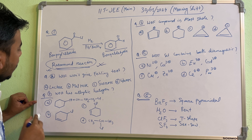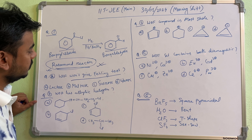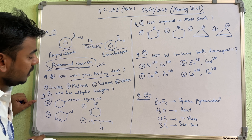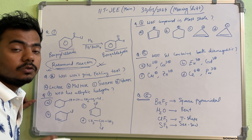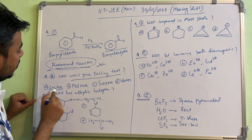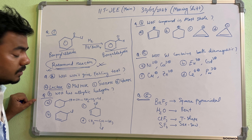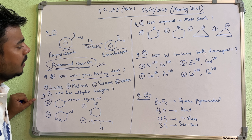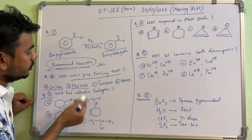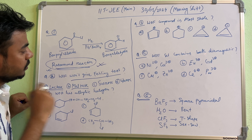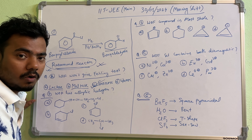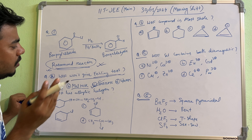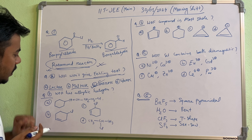The next question asks which of the following does not give Fehling's test. For Fehling's test you need a reducing sugar; non-reducing sugars will not show it. Lactose is a disaccharide (milk sugar) and is a reducing sugar, so it gives Fehling's test. Maltose is also a reducing sugar. The answer is sucrose — sucrose is a non-reducing sugar and will not give Fehling's test.